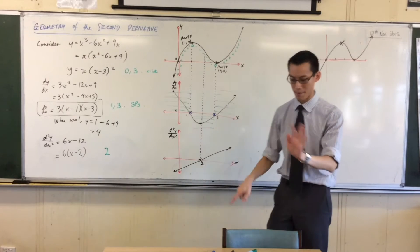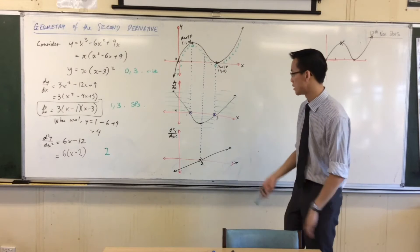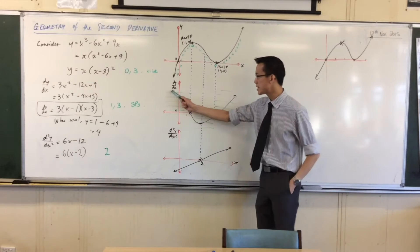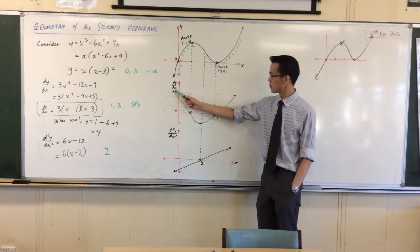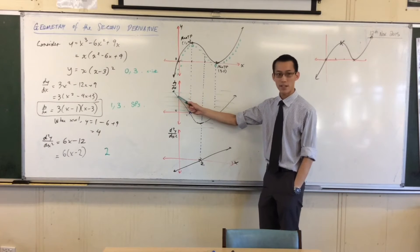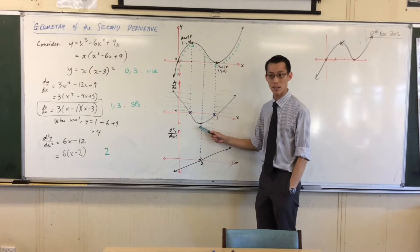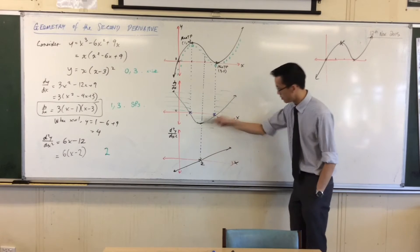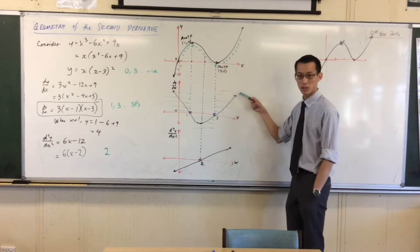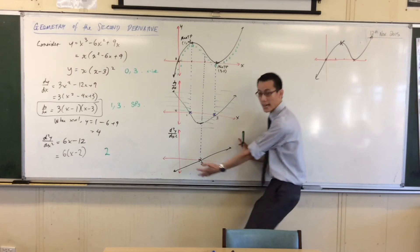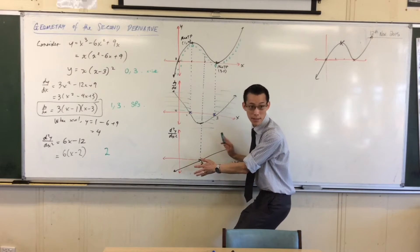I'm deliberately not going to draw it on because it will become confusing. But you can see — look at the sign: negative, negative, negative — that's the gradient, it's decreasing. Then zero, positive, positive — which is exactly the regions that this graph is passing through. Does that make sense?